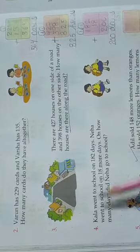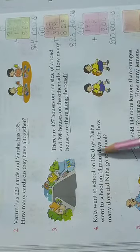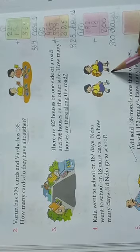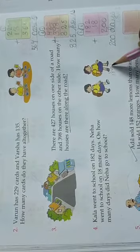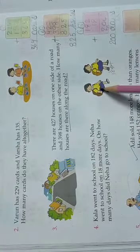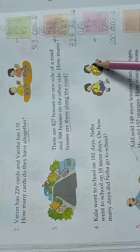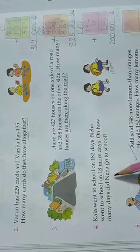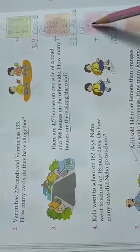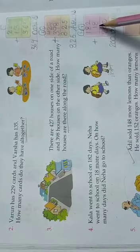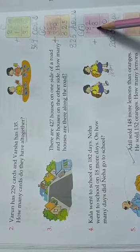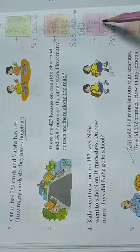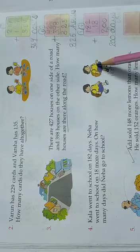Next. Kala went to school on 182 days. She is a girl named Kala. Neha went to school 18 days more. Neha went 18 days more than Kala. 18 days more. So on how many days did Neha go to school? How do you know? First, Kala was 182 days. And Neha compared to Kala went 18 days extra. So we'll add 182 and 18 days.